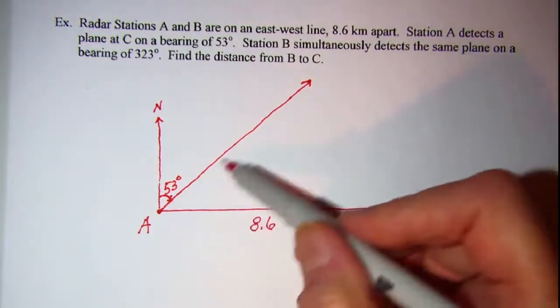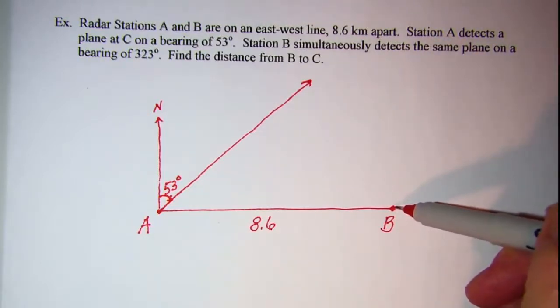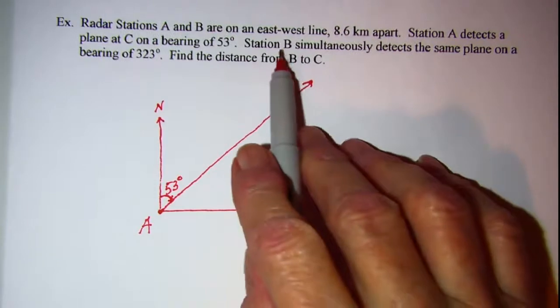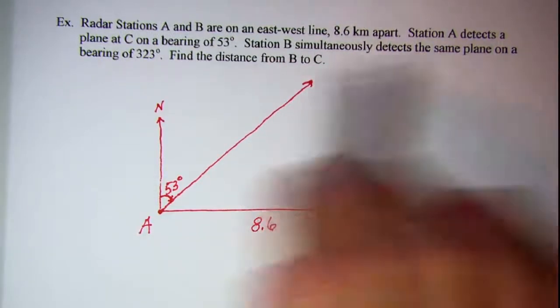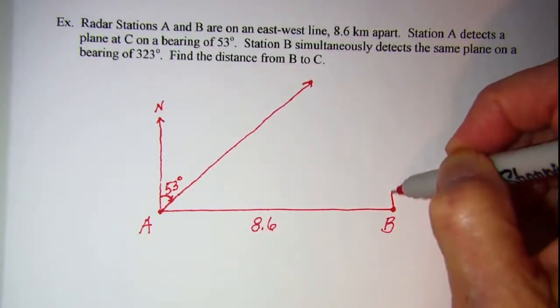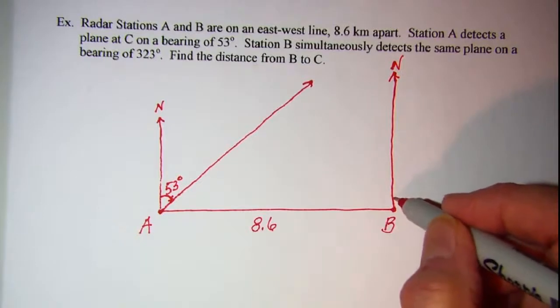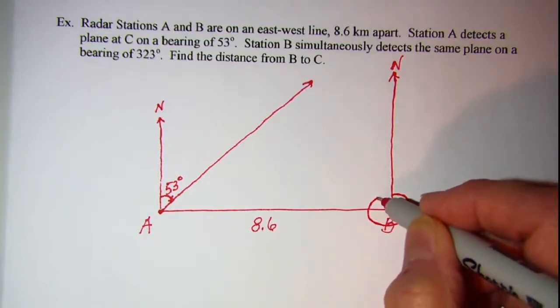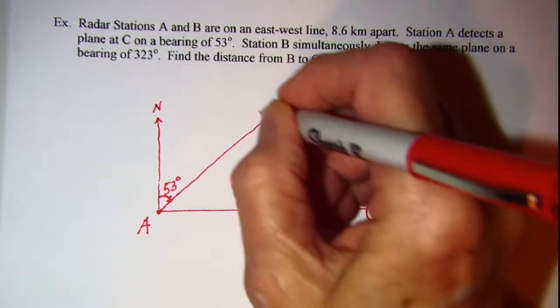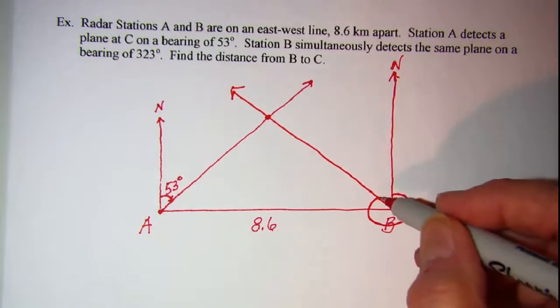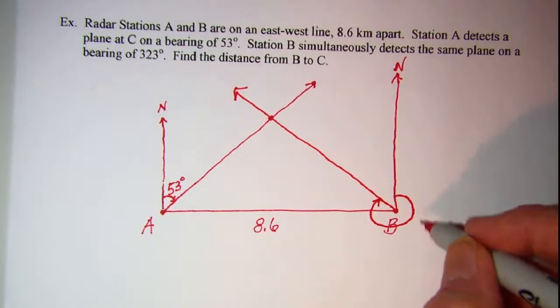Now the reason I said that this keeps going is because now I need to look at the bearing from point B, station B, and where that one intersects is going to be our plane. So for station B, he detects the same plane on a bearing of 323 degrees, so from our north line, 323 degrees, is going to come around to here, and that bearing then intersects the other one at this point right here, so this angle around this point is 323.